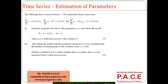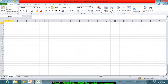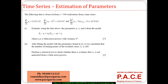Now, let us look at the estimation of parameters in a typical time series. The following data is observed for n equal to 500 realizations from a time series. I have observed the data for the last 500 observations.